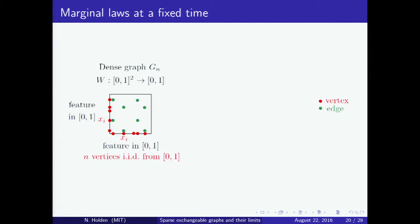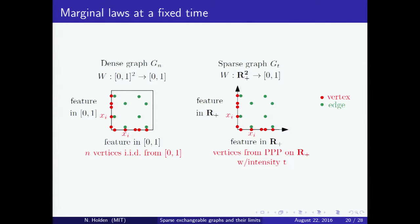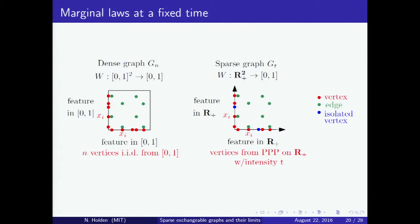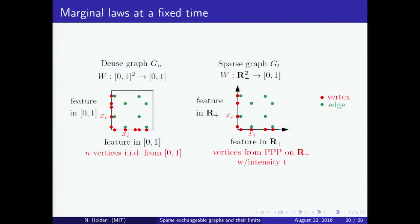To understand this new random graph model better, I compare it to the dense case. In the dense setting, we have a graphon on the unit square with values between 0 and 1, and we get GN by generating n points from the unit interval and connecting them with probability given by W. In the new setting, we consider a graphon in the first quadrant. To sample a graph with the same marginal law as Gt, we first sample a Poisson point process with intensity t on the positive real line. We then connect any pair of vertices with probability given by W. There will be infinitely many isolated vertices in the resulting graph, and we get the finite graph Gt by removing all isolated vertices.